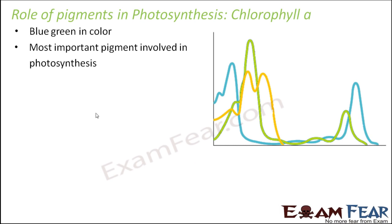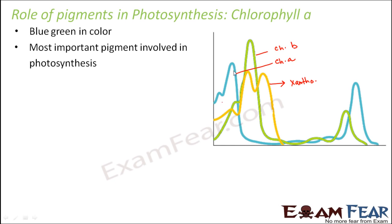If you look at the graph of absorption of the different pigments, the blue colored line is for chlorophyll A and the orange colored line is for carotenoids or xanthophylls. This graph or plot shows the rate of absorption — how much absorption does each pigment do. The x-axis shows the wavelength of light and the y-axis shows the absorption rate. Chlorophyll A shows peaks at both the red and blue regions, meaning maximum absorption happens in those regions, and that is why maximum photosynthesis takes place in these two regions.